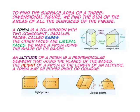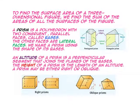To find the surface area of a three-dimensional figure, we find the sum of the areas of all the surfaces of the figure. A prism is a polyhedron with two congruent parallel faces called bases. The other faces are called lateral faces. We name a prism using the shape of its bases. Because the base in this prism is a pentagon, it is a pentagonal prism. Because the base in this prism is a triangle, it is a triangular prism.